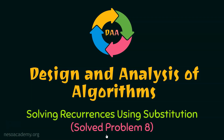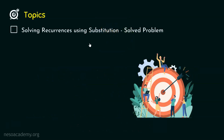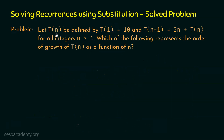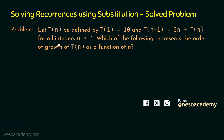Let's solve problem number 8 on recurrences using substitution. Let t(n) be defined by t1 equal to 10, and t(n+1) is equal to 2n plus t(n) for all integers n greater than or equal to 1. Which of the following represents the order of growth of t(n) as a function of n?